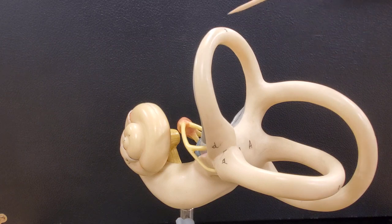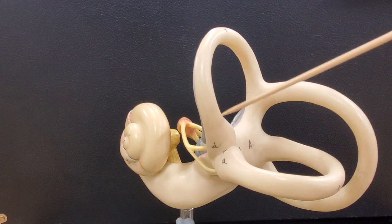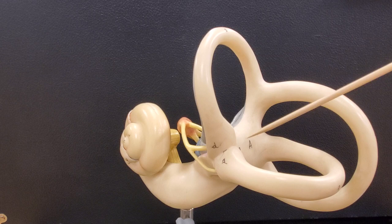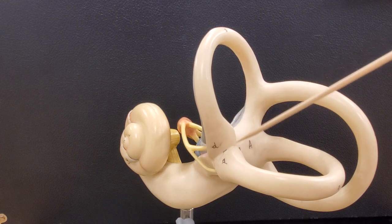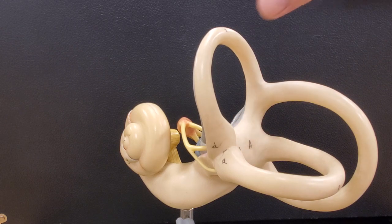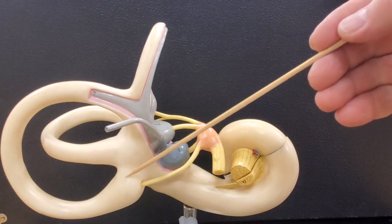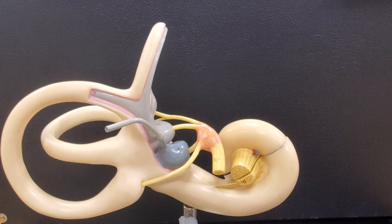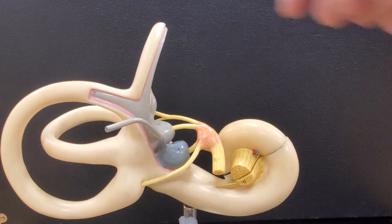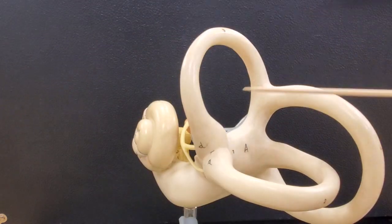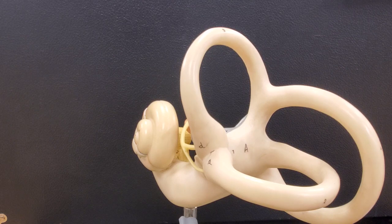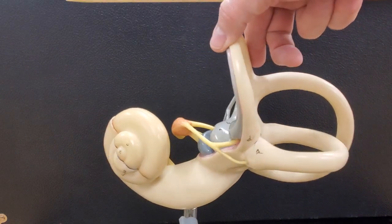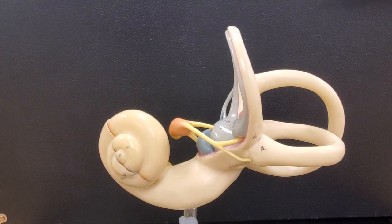Where each of the semicircular canals joins the vestibule over here, there's this enlarged area. Each one of these enlarged areas, there's one here for the lateral semicircular canal and there's one on the back side here. This corner is kind of a swollen area. Those are each called an ampulla. So we see an ampulla there and we see two more ampullae here and here. That's where some of the receptors are for our rotational motion.